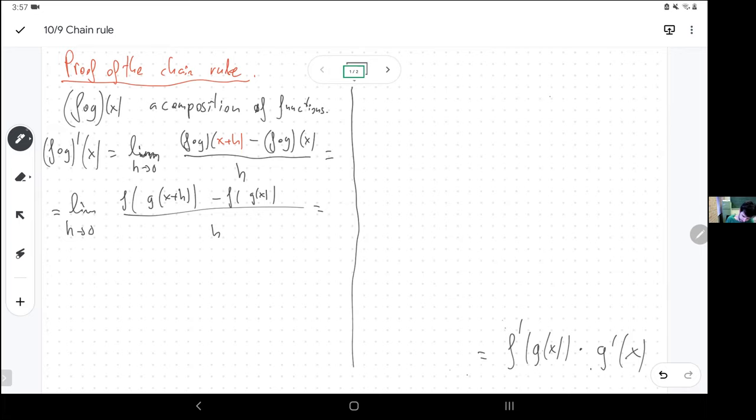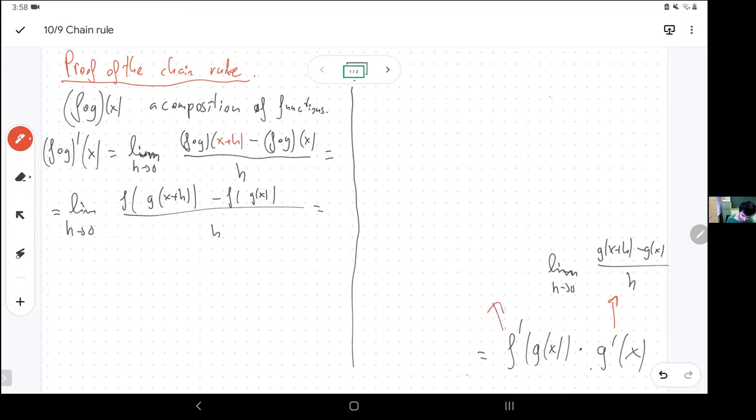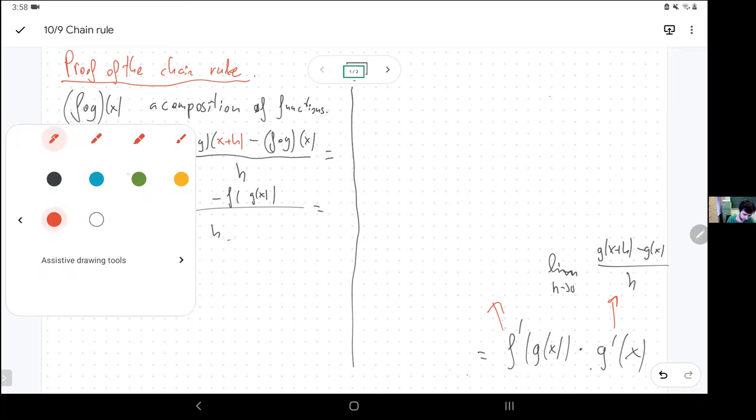So the derivative of g at x, that looks like the limit of g of x plus h minus g of x divided by h as h approaches 0. And now here I have the derivative of f, but I plug in something else that's not x.